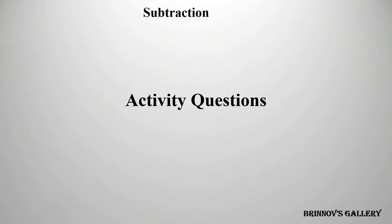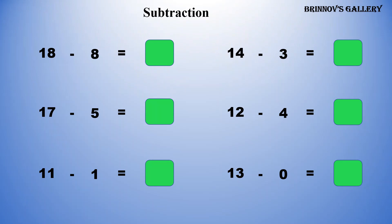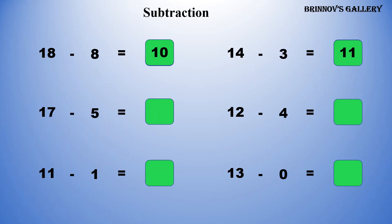Activity questions. 18 minus 8 is equal to 10. 14 minus 3 is equal to 11. 17 minus 5 is equal to 12. 12 minus 12 is equal to 0. 11 minus 1 is equal to 10. 13 minus 0 is equal to 13.